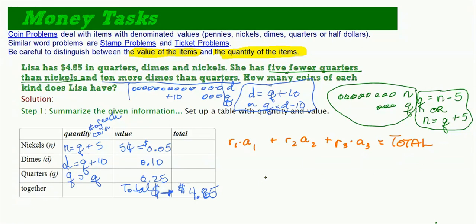So, let's go for it. The rate would be the value, and then, of course, amount would be the number of coins. So, let's put our representation for the value of the nickels. So, the 0.05, times the amount of nickels, which would be Q plus 5, plus the dimes value, times the amount of dimes, which is Q plus 10. All right, and then we can write just plus, what, 0.25 for quarters, times Q quarters, is equal to $4.85. So, this is the equation we'll solve.